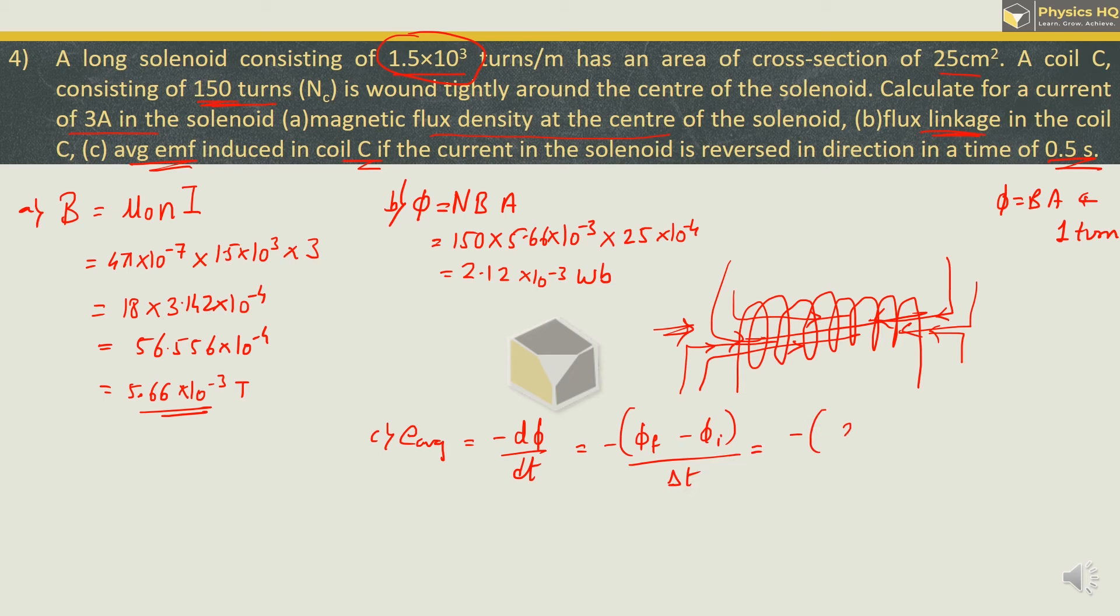So we will have final flux minus initial flux divided by the change in time. Final flux is again 2.12 into 10 raise to minus 3 but it will be opposite in direction, so we will have minus sign. Minus initially 2.12 into 10 raise to minus 3 divided by the time taken was 0.5 seconds. So this will give us minus minus is plus. So we will have 2 into 2.12 which is 4.24 into 10 raise to minus 3 divided by 0.5. 0.5 is nothing but 1 by 2. So finally we will have 8.48 into 10 raise to minus 3 volts.